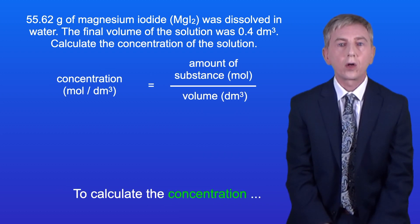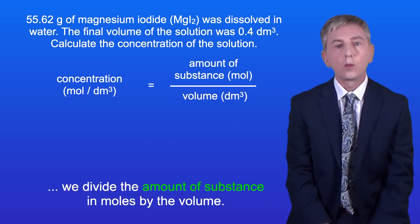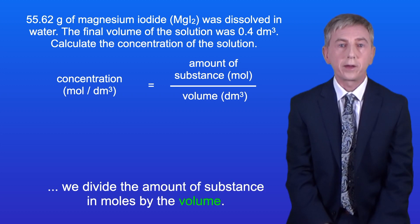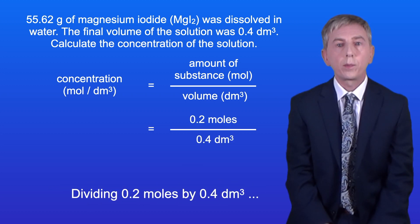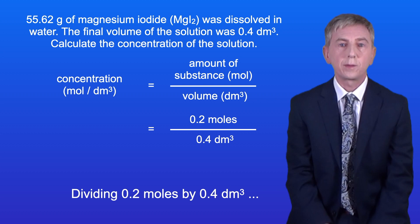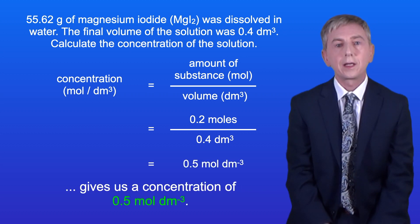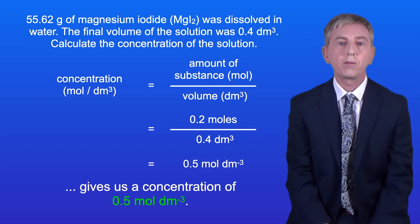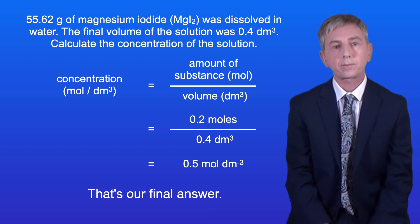To calculate the concentration we divide the amount of substance in moles by the volume. Dividing 0.2 moles by 0.4 decimetres cubed gives us a concentration of 0.5 moles per decimetre cubed, and that's our final answer.